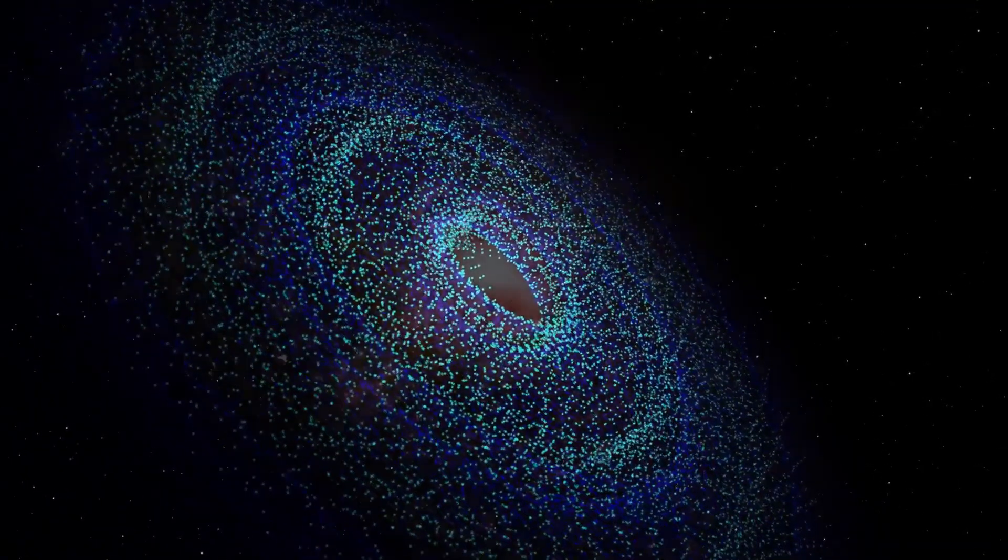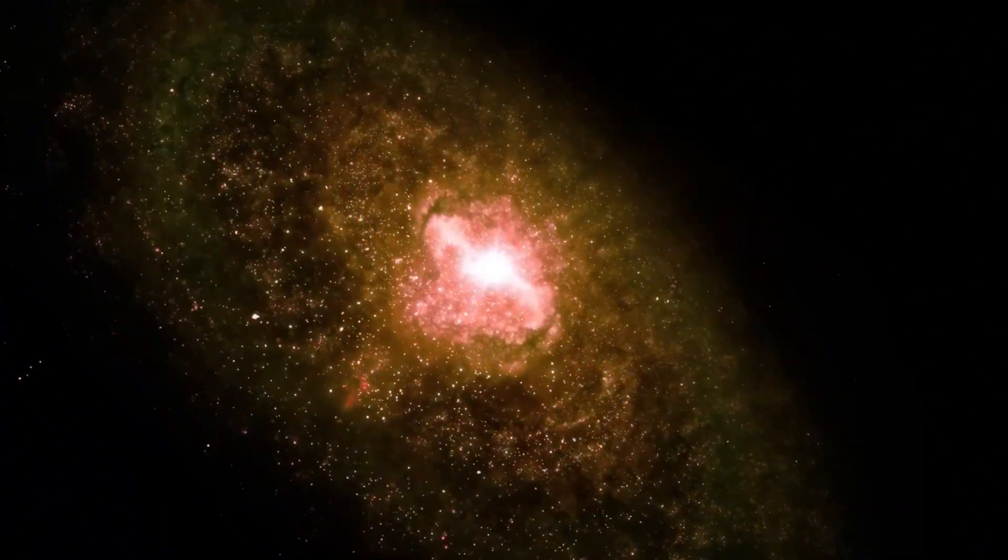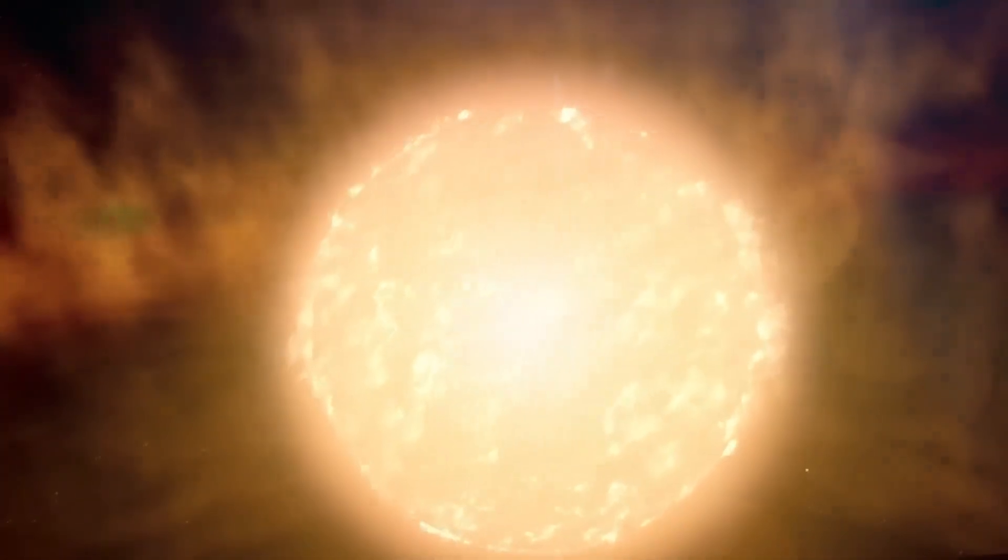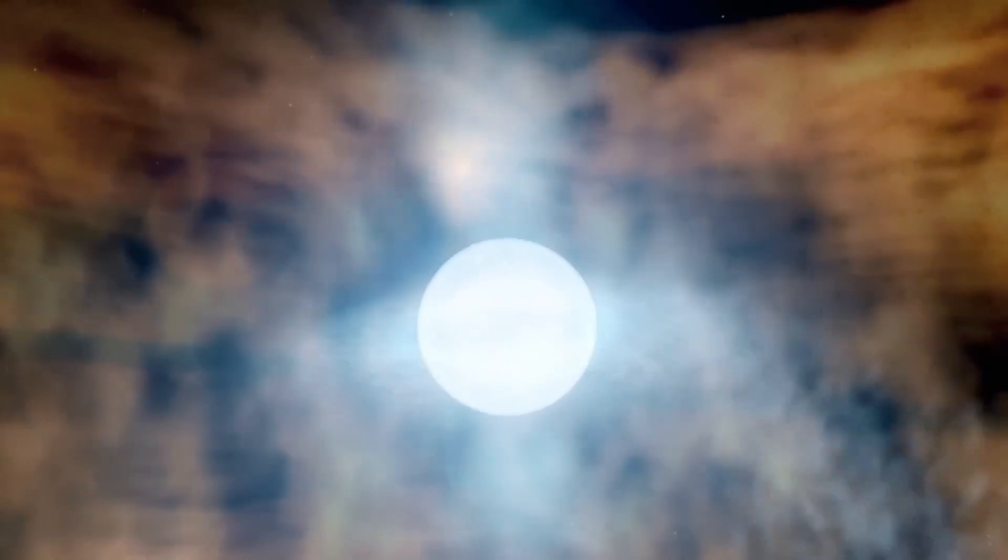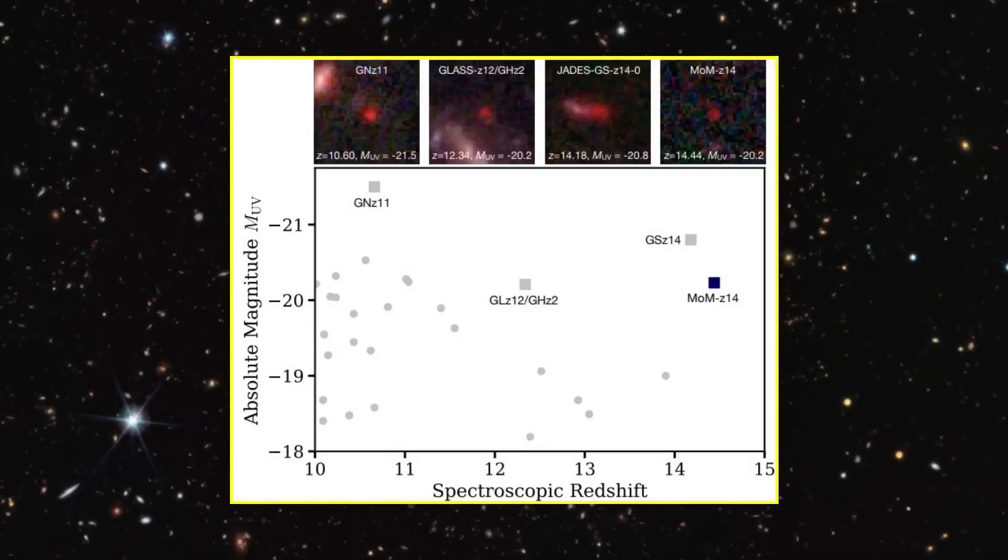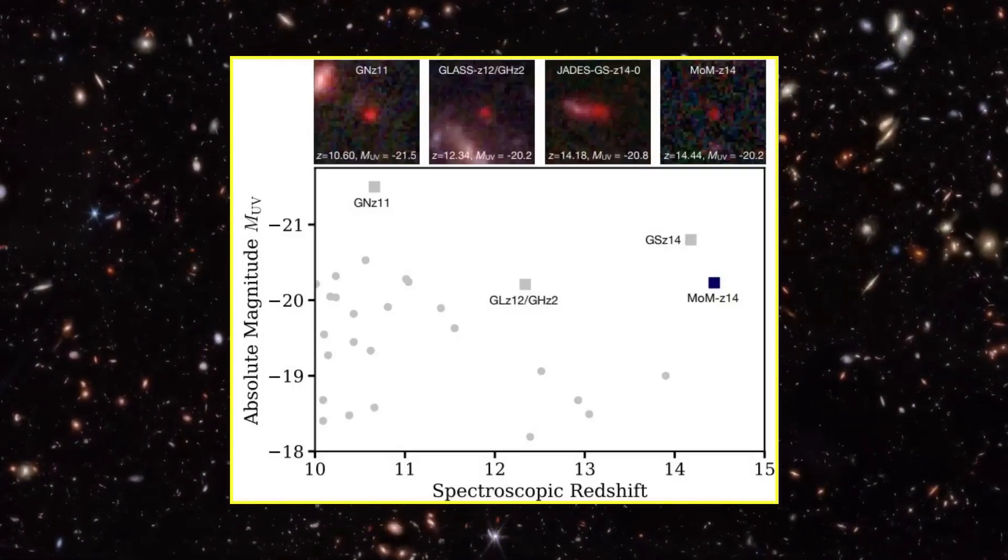In one of JWST's early campaigns, a galaxy named JADES-GS-z14-0 was found. It held the record for the most distant confirmed galaxy, with a redshift of 14.32.